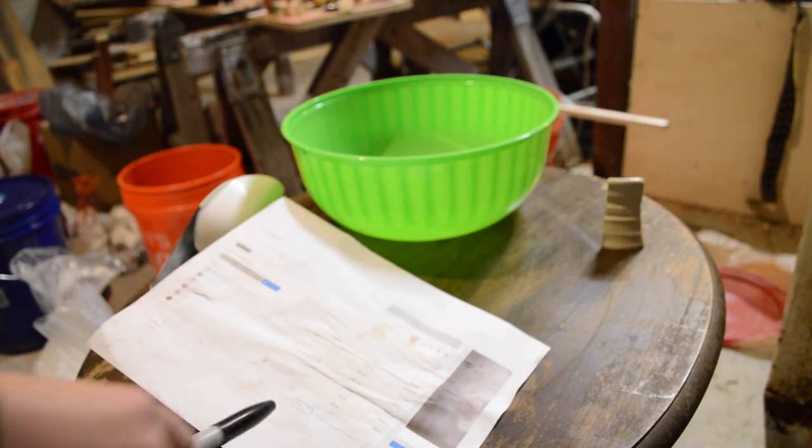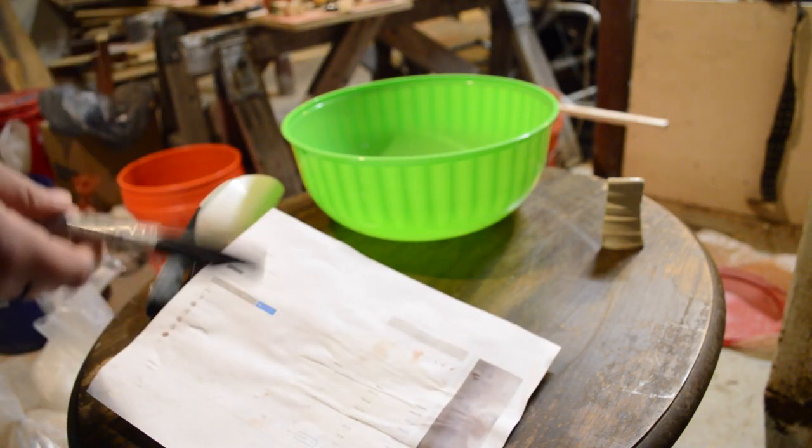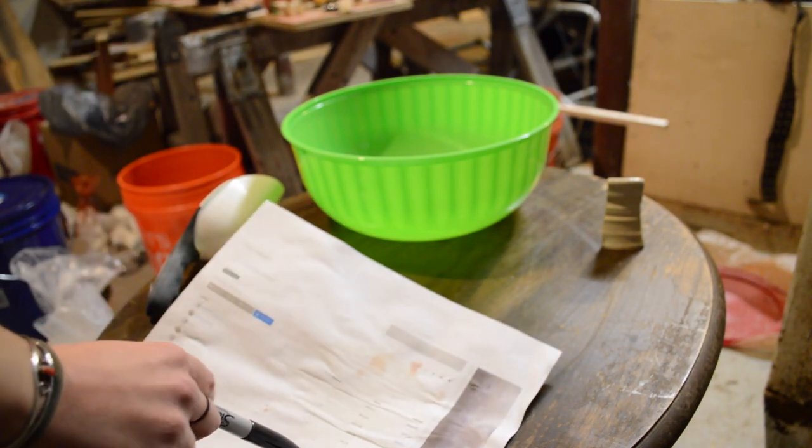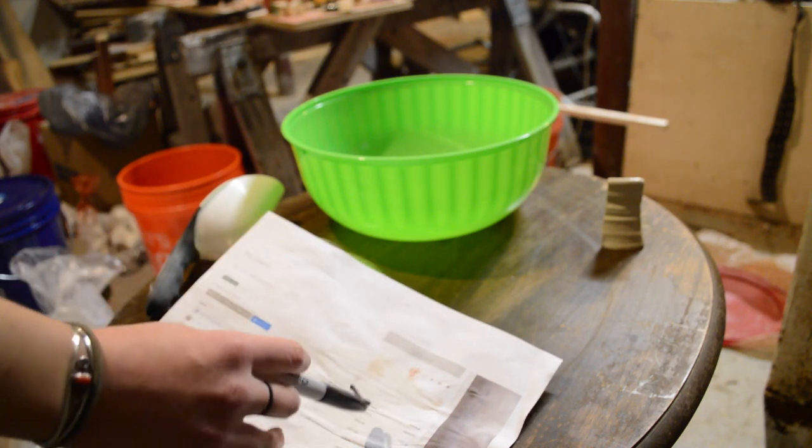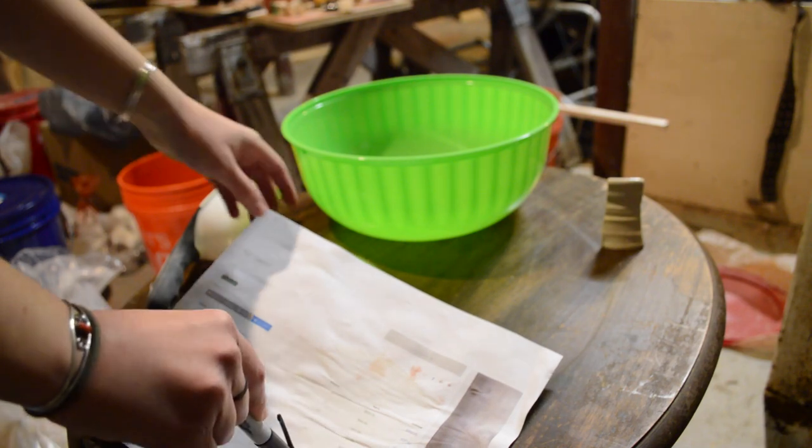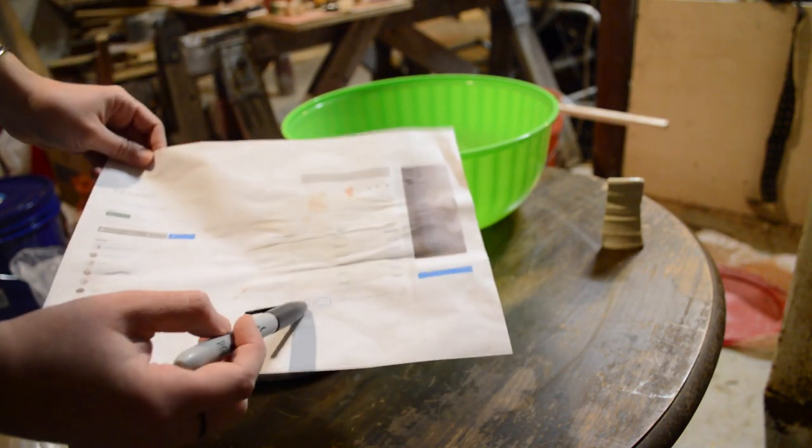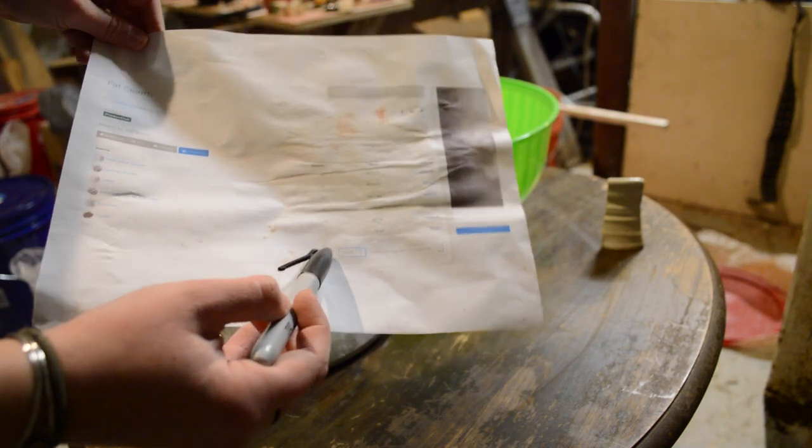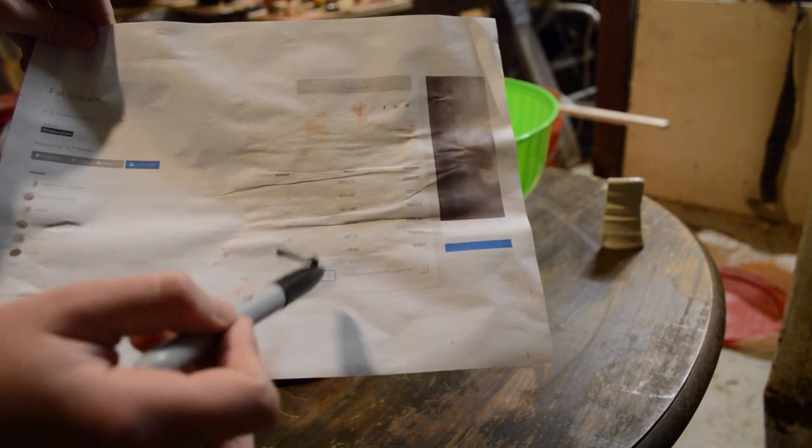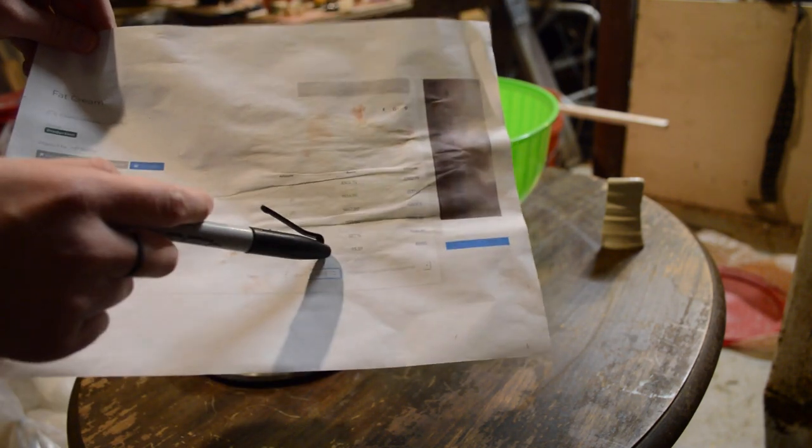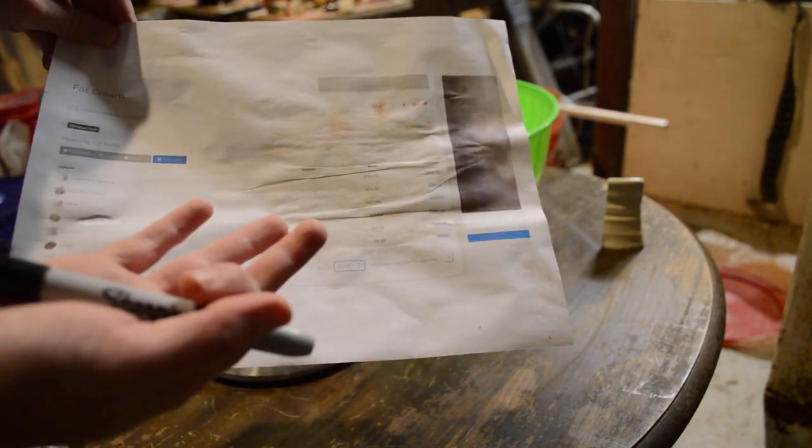I'm making 8,000 grams of this glaze. And 8,000 grams is generally enough to fill up a five-gallon bucket. What I love about Glazy.org is that you can put your total desired batch into the bottom here. You can put the total grams that you want in the bottom area here, and then it tells you how much you need of each material without you having to do the calculations.